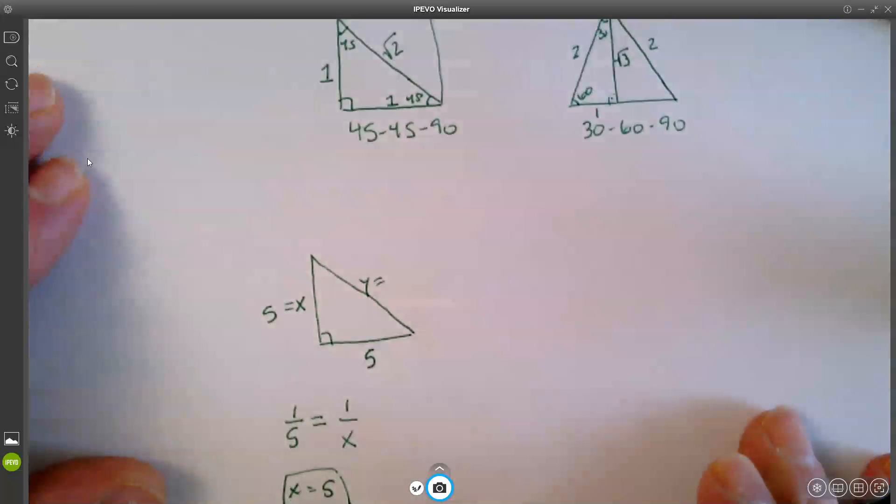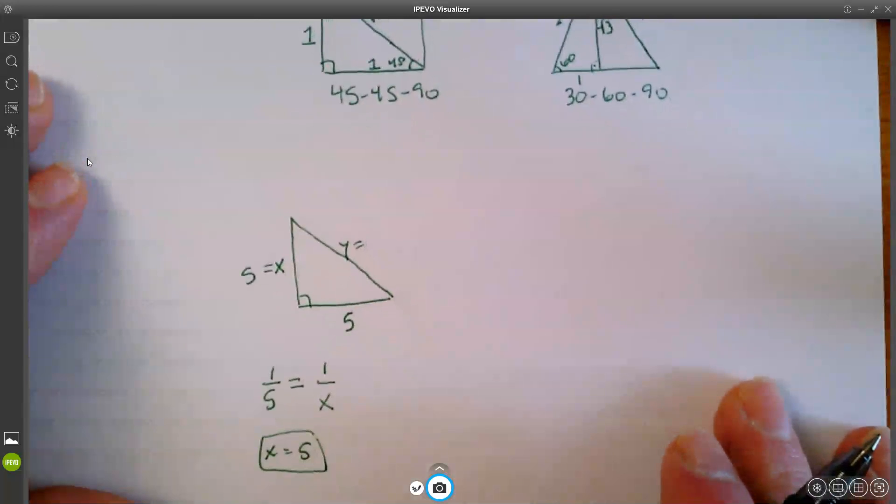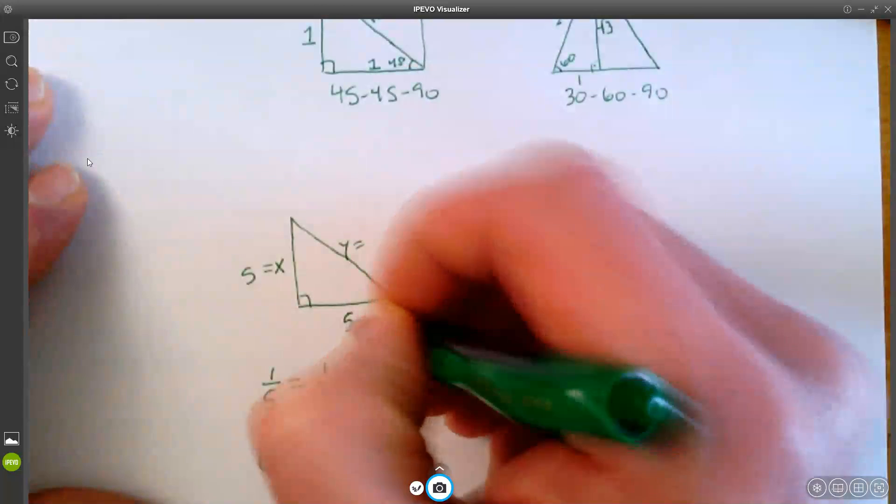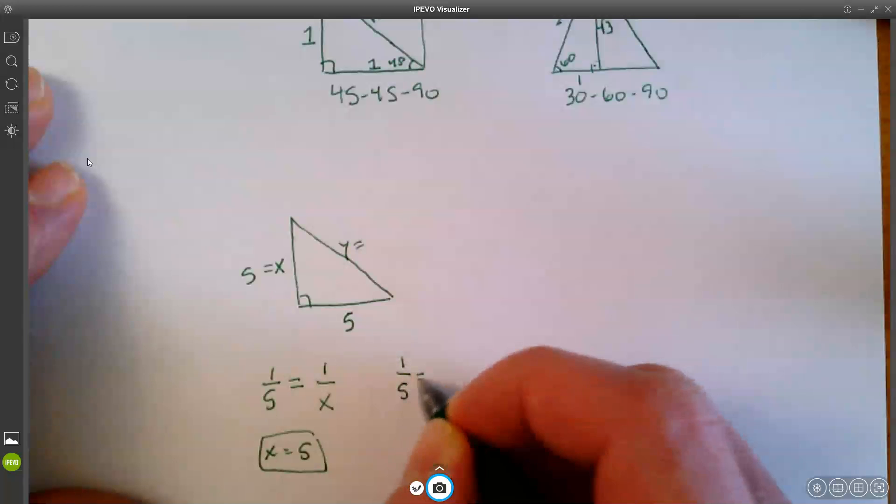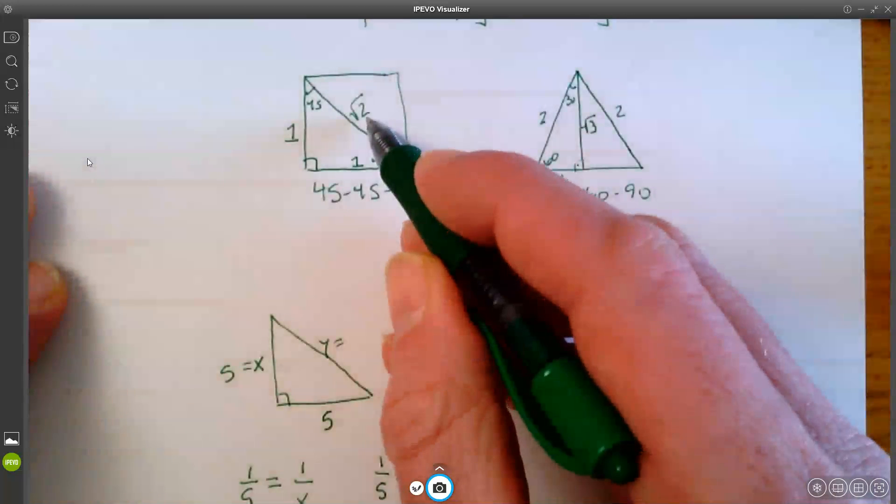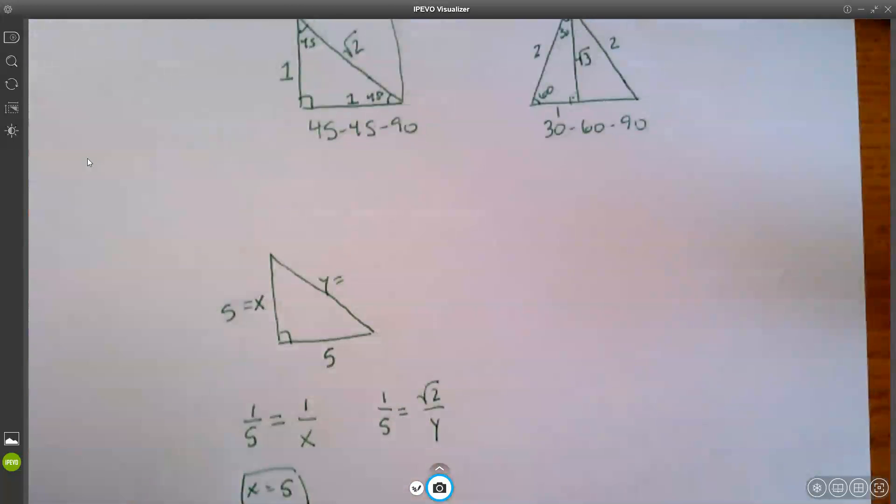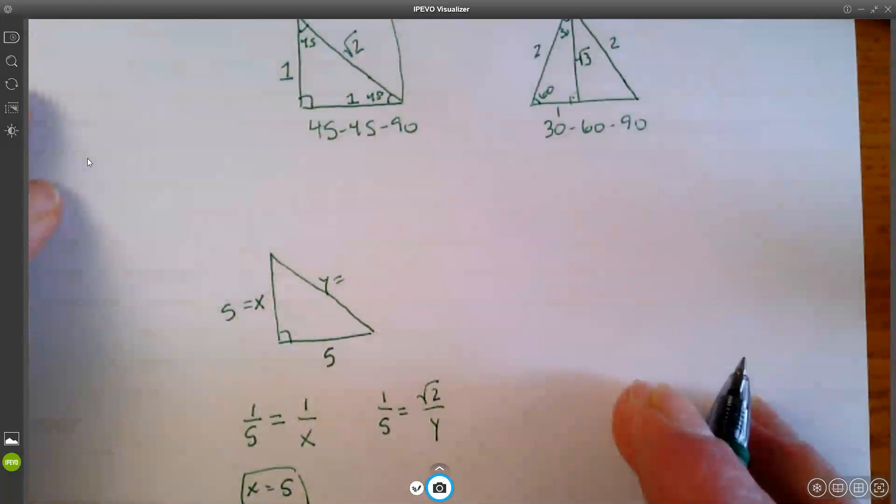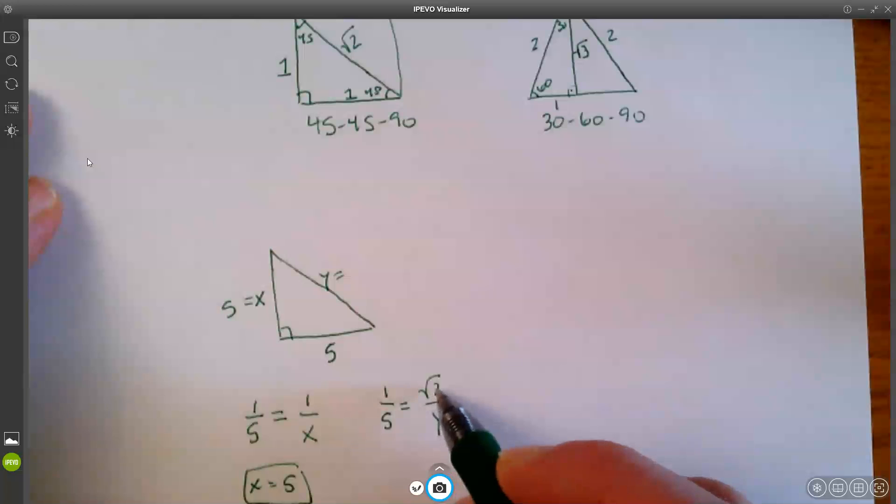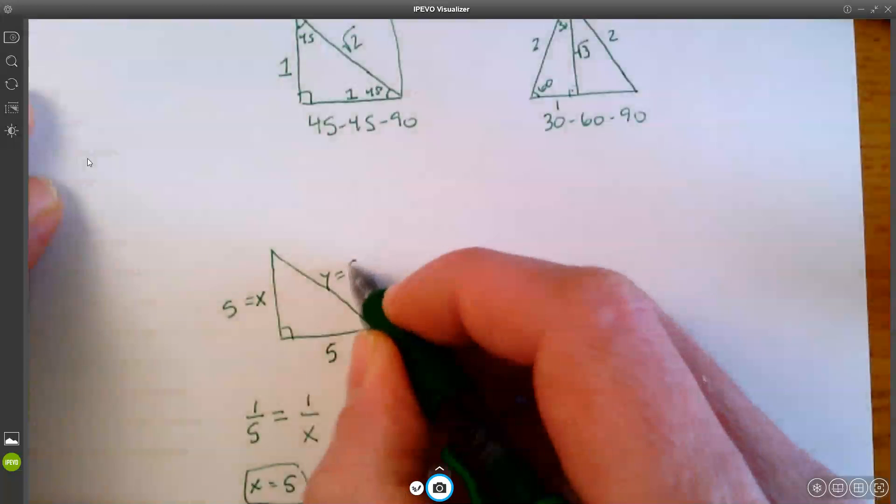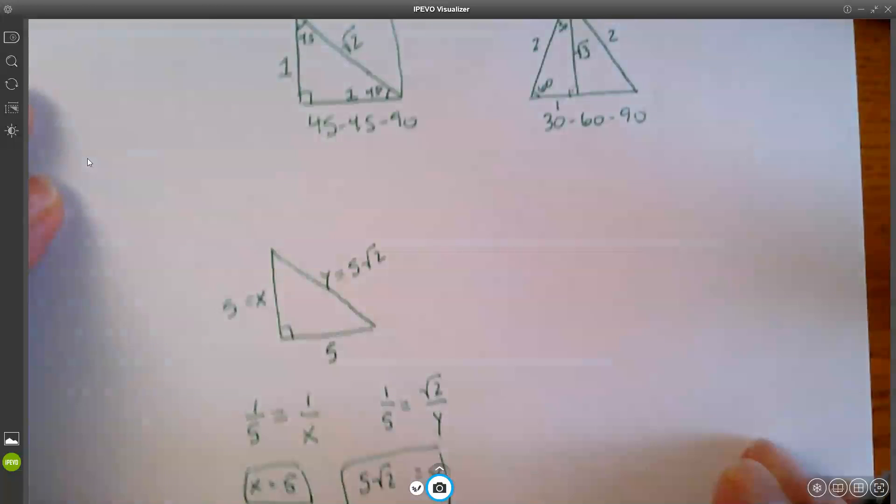We'll call this y over here. Now we're going to figure out y and we'd say, well, 1 to 5 would be the same as square root of 2 to y. Because we know that the scale factor will be the same for everything. So I'll cross multiply, 5 times the square root of 2. We'll just write that as 5 times the square root of 2 equals 1 times y, which is just y. And then we're done. So this is 5 times the square root of 2.